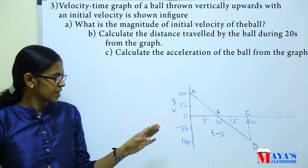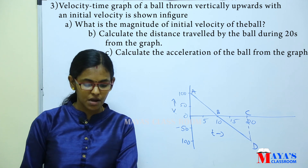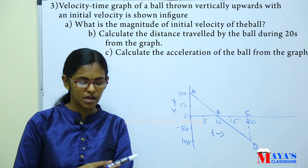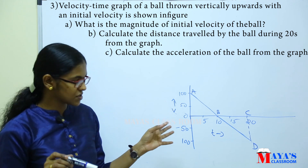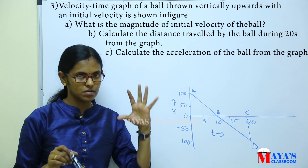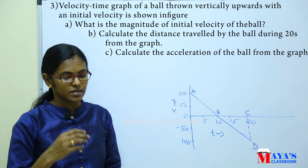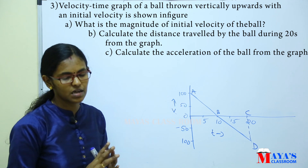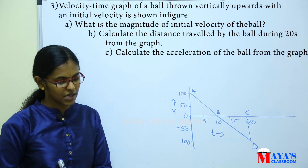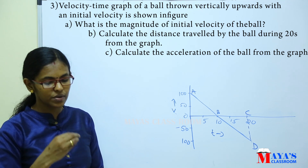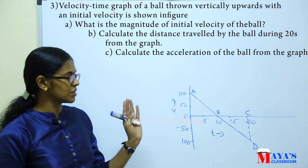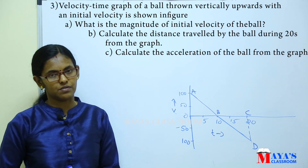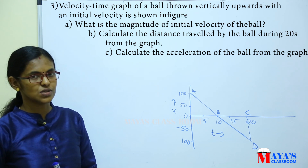The next question involves a velocity-time graph of a ball thrown vertically upwards with an initial velocity. From the graph, calculate: the magnitude of the initial velocity of the ball, the distance traveled by the ball during 20 seconds, and the acceleration of the ball from the graph.